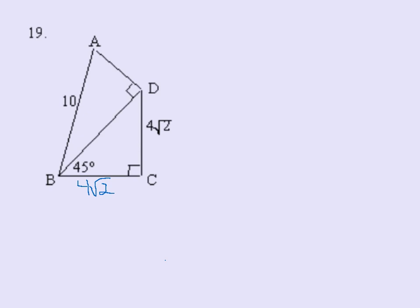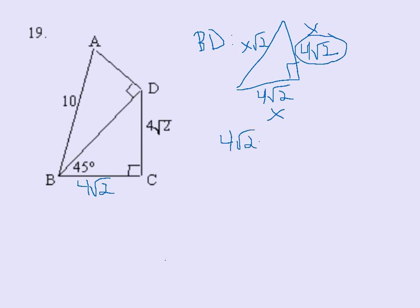And the hypotenuse BD, if you use the special right triangle rules, if this is 4 root 2 and this is 4 root 2, how do we figure out the hypotenuse? Remember that this is X, X, and X root 2. So that means X is equal to 4 root 2. So BD is going to be 4 root 2 times root 2, which equals 4 root 4. And because the square root of 4 is 2, 4 times 2 is 8.